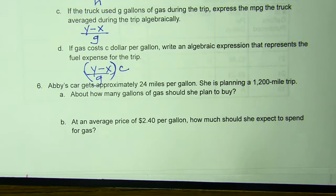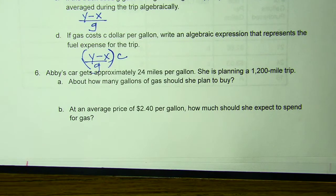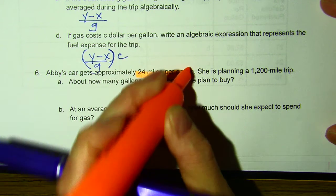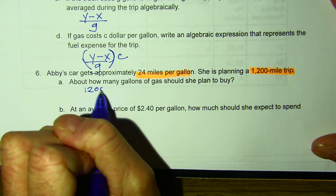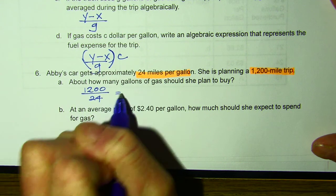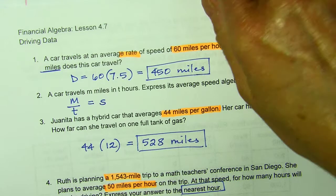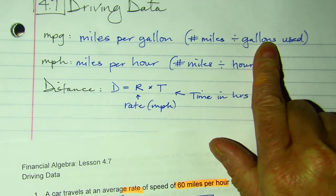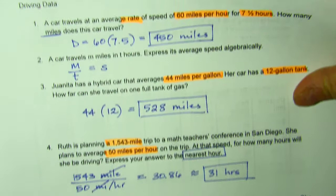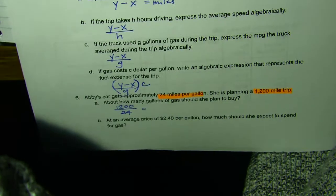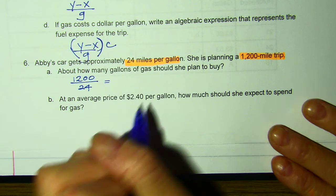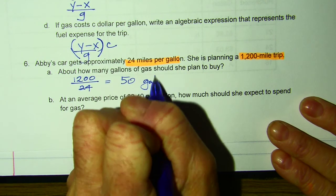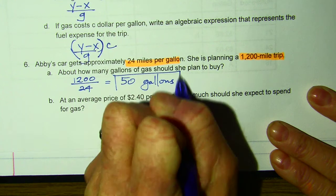Number six. Abby's car gets approximately 24 miles per gallon. She's planning a 1,200 mile trip. How many gallons should she buy? Well, 1,200 divided by 24. Remember, we do miles divided by gallons, or miles divided by hours. So if we're talking about gallons, I'm dividing. So 1,200 divided by 24, and I got 50 gallons. So she's going to need 50 gallons to get there.